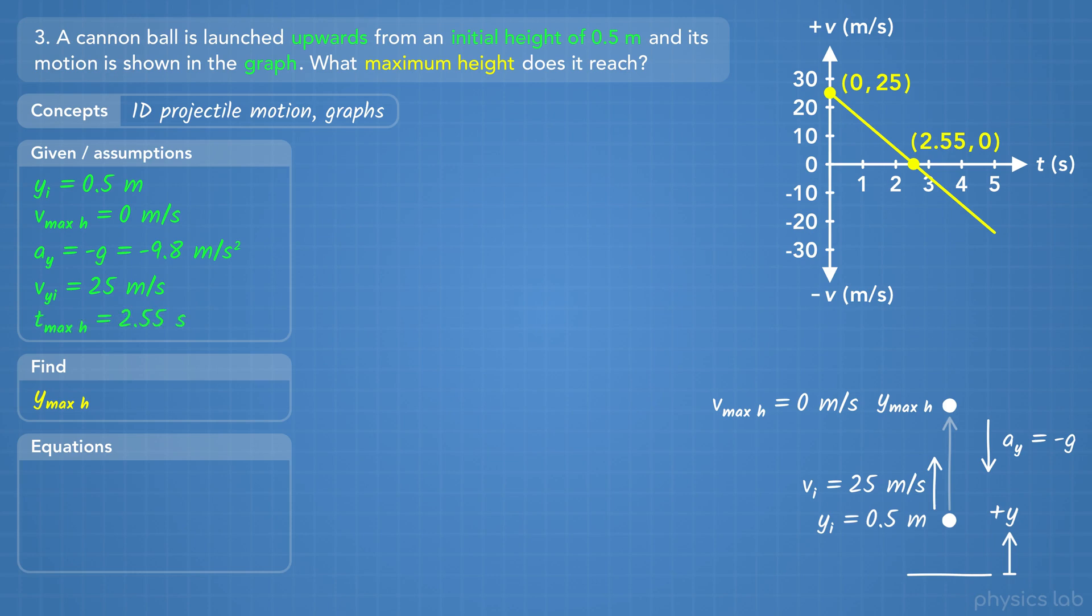The ball starts moving upwards with a positive velocity, but it's slowing down. It reaches 0 meters per second at the maximum height, and then the velocity becomes negative and speeds up as the ball falls down.